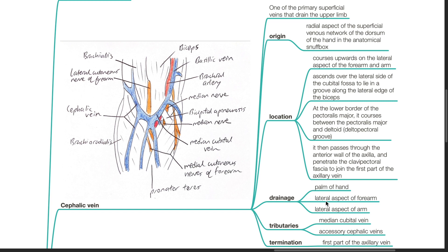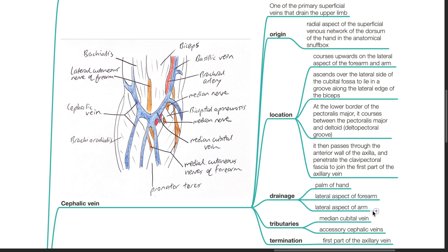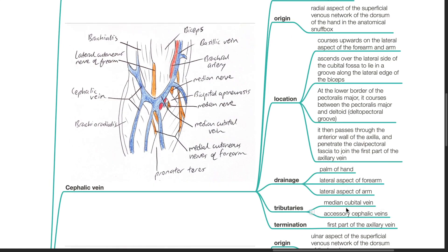It drains the palm of the hand, lateral aspect of the forearm and lateral aspect of the arm. Tributaries include the median cubital vein and the accessory cephalic veins. It terminates in the first part of the axillary vein.